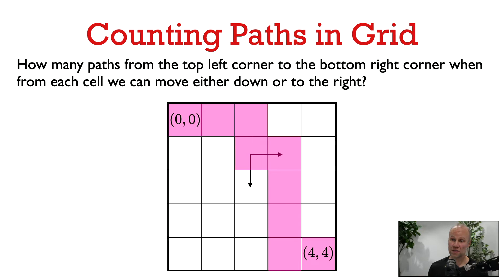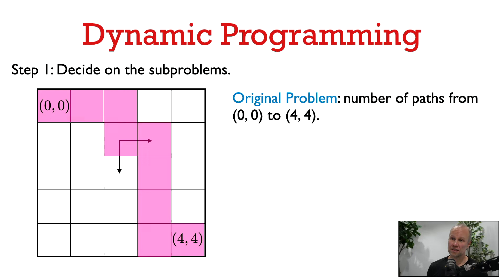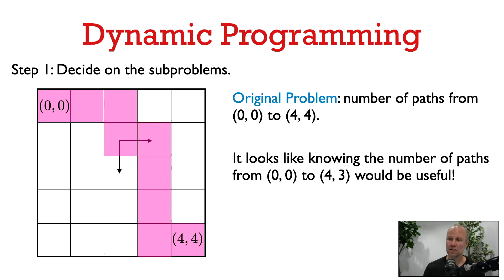So from cell 0,0 to cell 4,4, we want to count the number of paths. The first step in dynamic programming is to think about what the subproblems should be — what is a problem similar to our original problem that is going to help us solve it? What information, if we knew it, would help us solve our original problem?